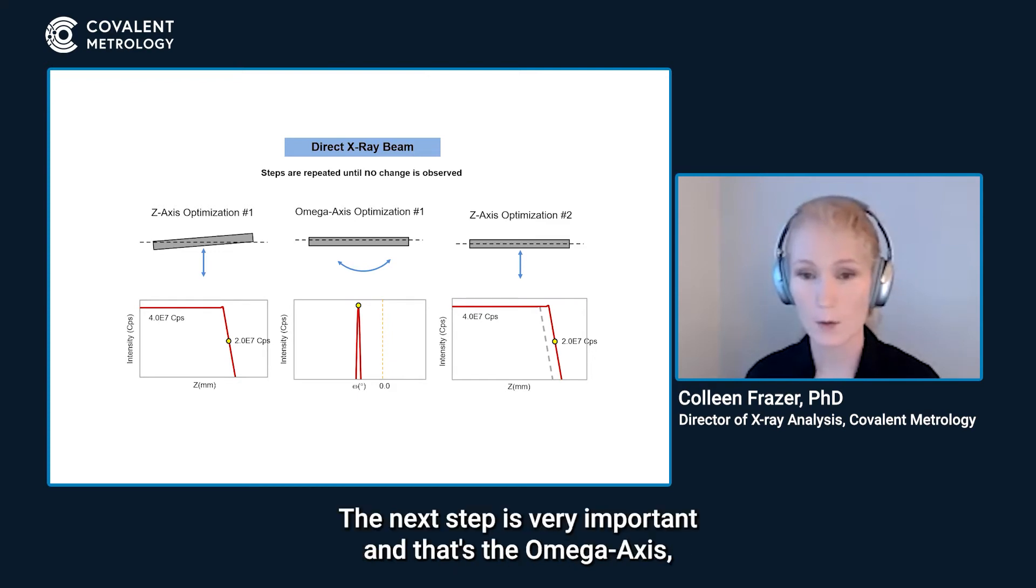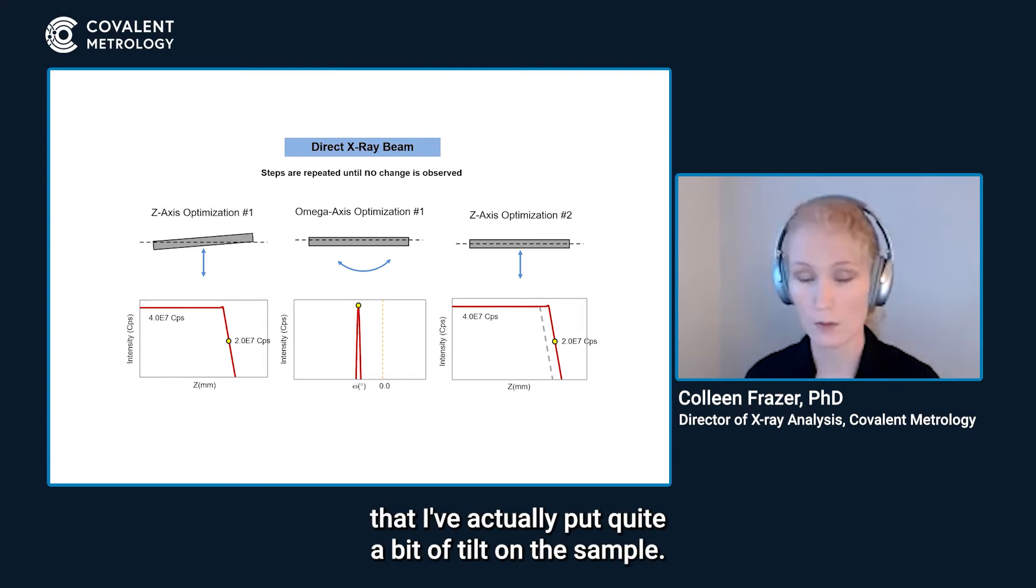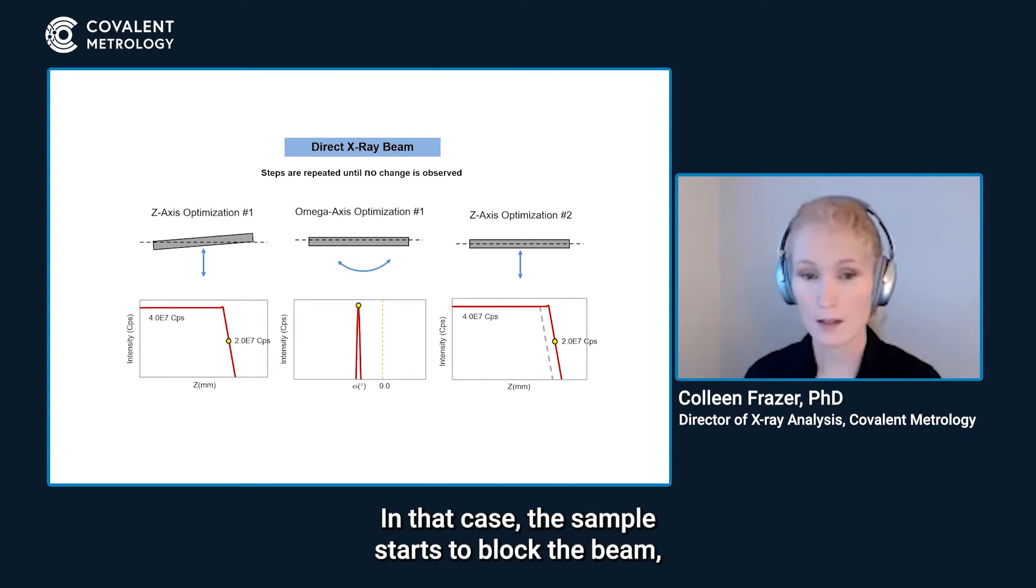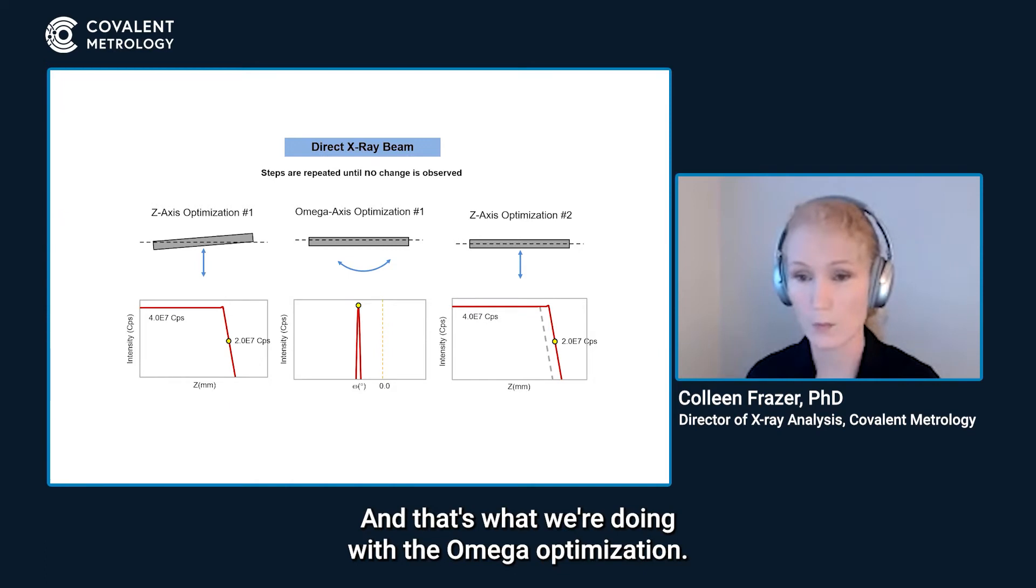The next step is very important and that's the omega axis, which is a rocking curve axis. You can see in the first schematic that I've actually put quite a bit of tilt on the sample. In that case, the sample starts to block the beam at a lower Z value than is actually the correct value. So the next step we need to correct for that tilt and that's what we're doing with the omega optimization.